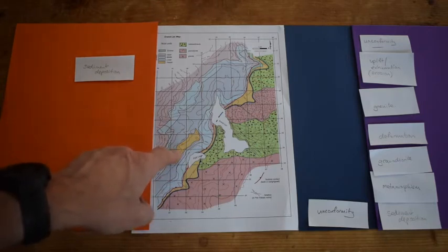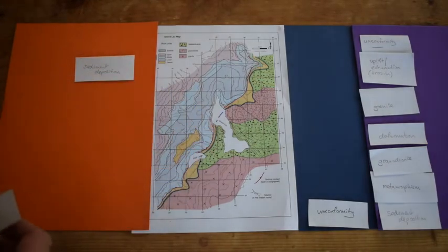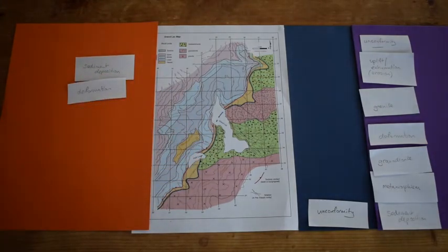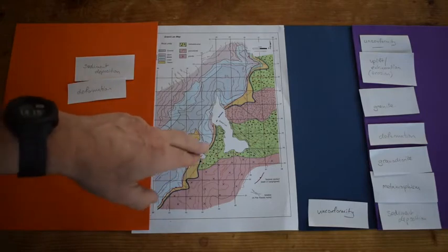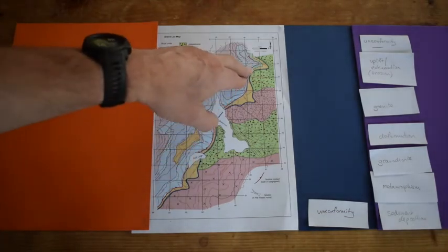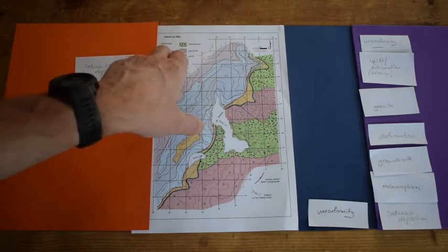What else is going on? Well, I can see that we've got our Triassic rocks here that are above here, so there's clearly deformation. There's a fault, so we've got deformation in here as well.